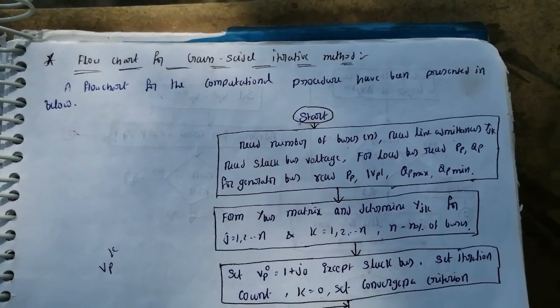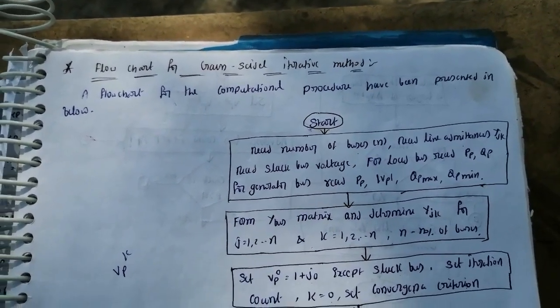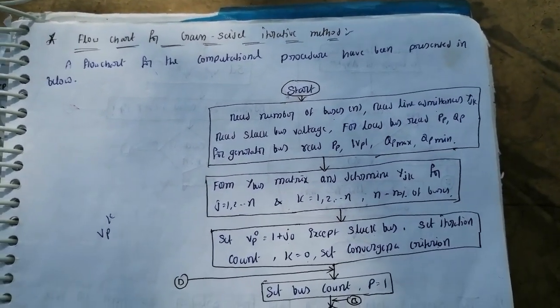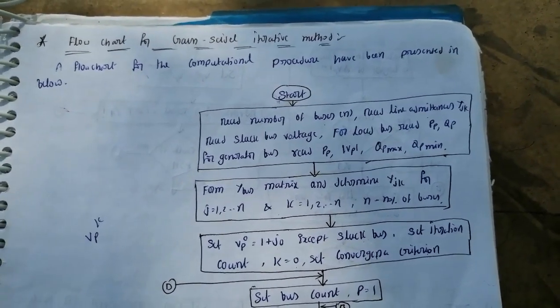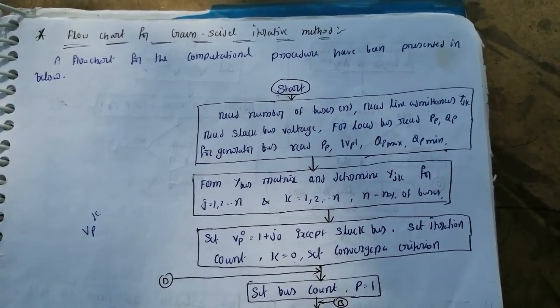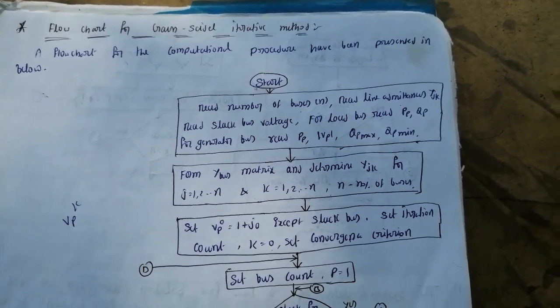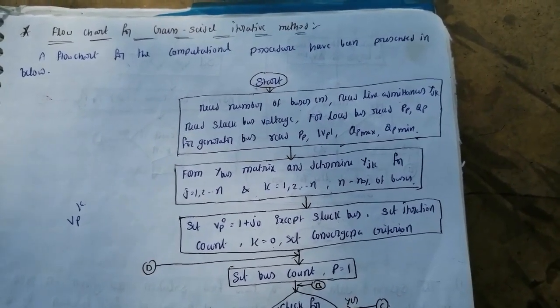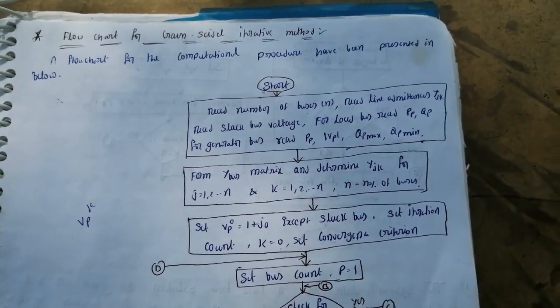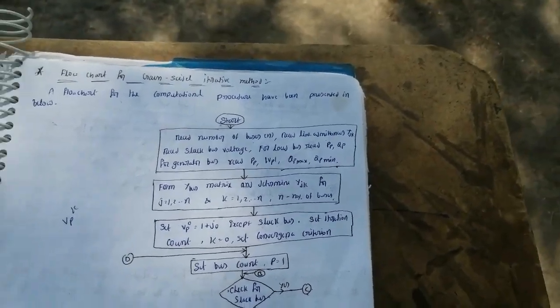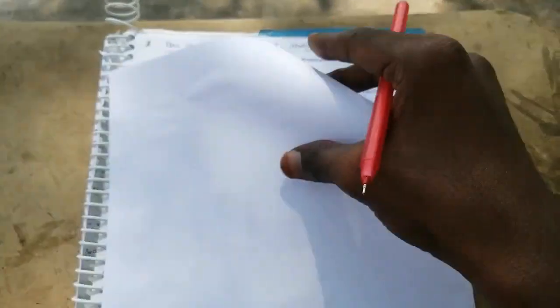In this video I am going to explain the flowchart for the Gauss-Seidel iterative method. This is the most important question from Unit 3, and the algorithm is also important. If you learn the algorithm, you can easily draw the flowchart. Before going to the explanation of the flowchart, let me explain the function of each box we are using in the flowchart.